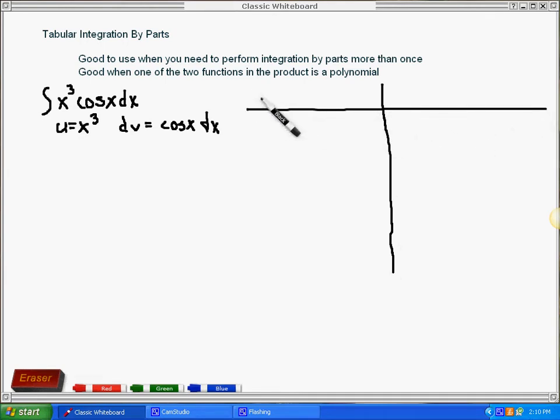In the first column, you find the derivatives of u. And in the second column, we find the repeated integrals of dv. We start out here just by putting x to the third in the first spot and cosine x in the second spot.